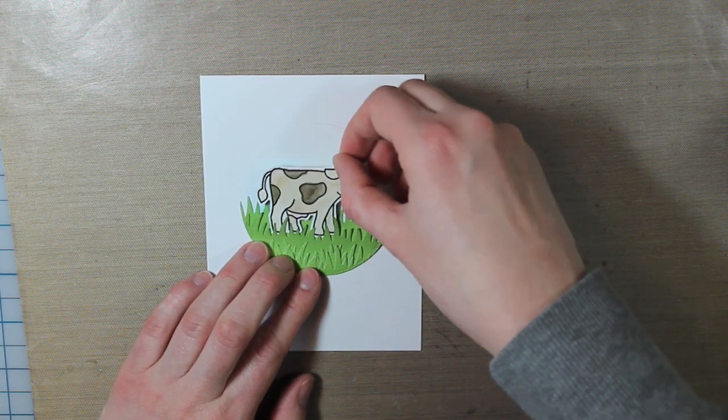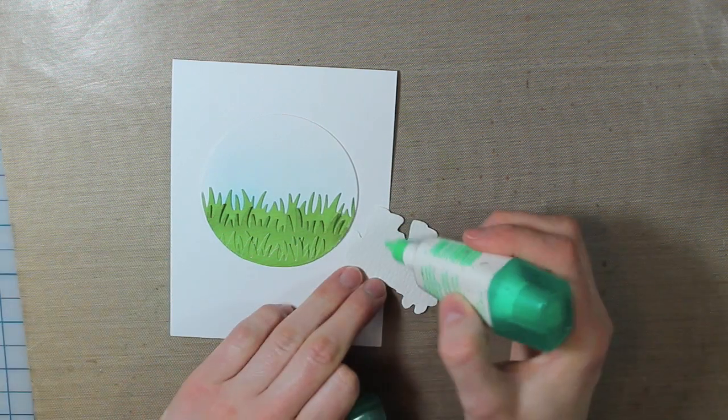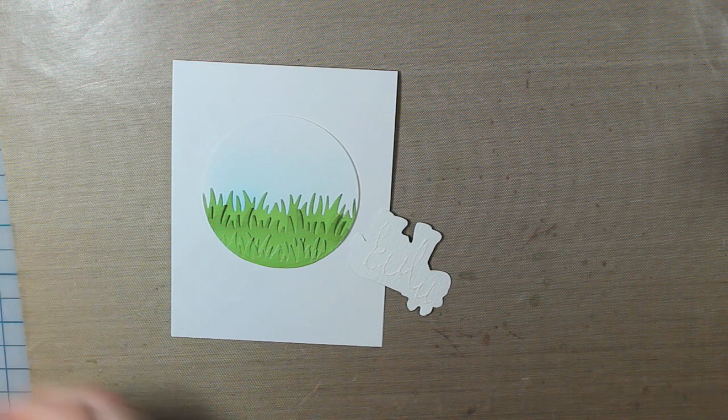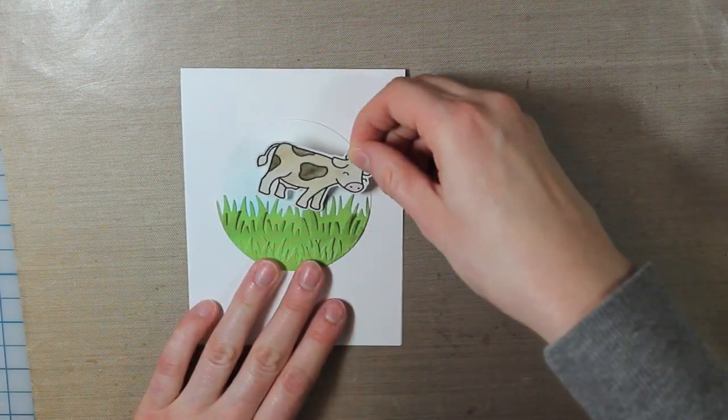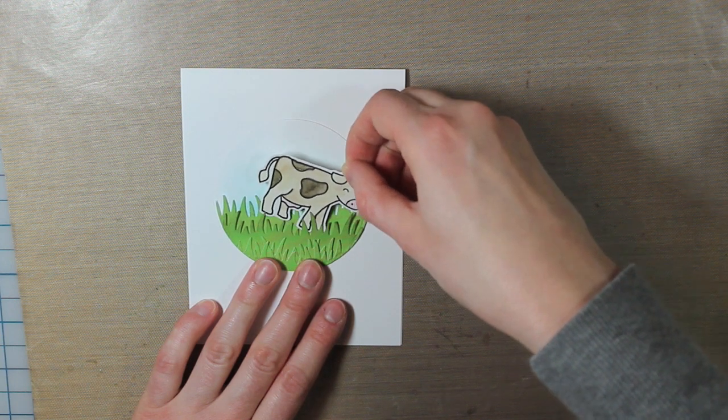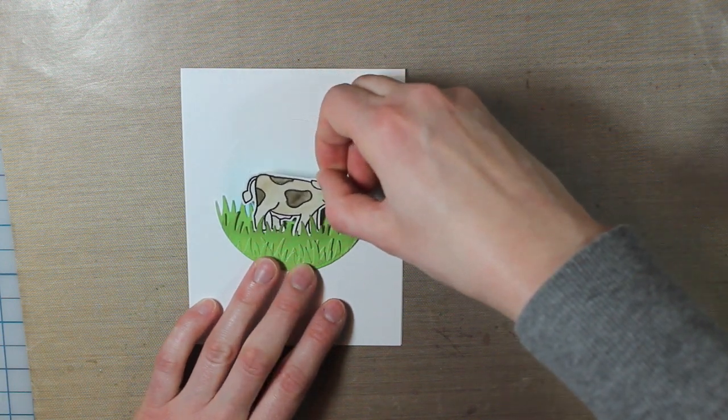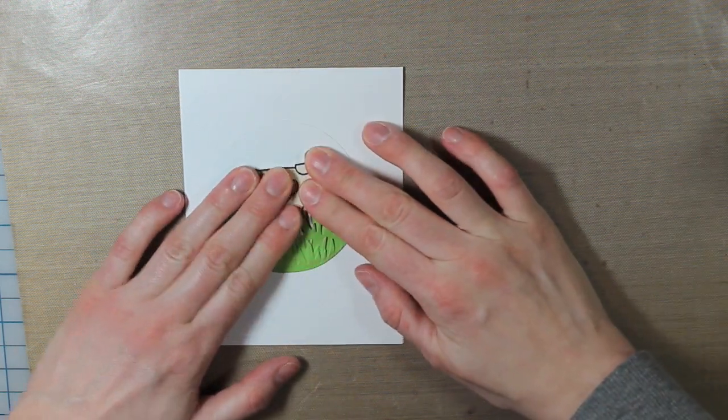I'm just going to go ahead and slide my cow in between a few of those layers of grass just to make sure that's where I want it. And then when I know where I want the cow to go, I will just put some Tombow Mono Multi Glue on the back and then adhere it into place. I'll just slide it in there and then push down for a few seconds just to make sure that it is secure.